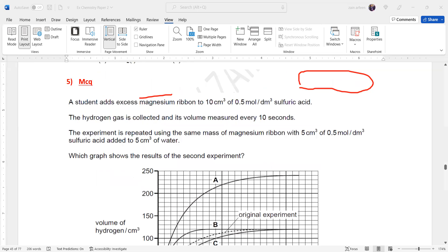At the beginning of the experiment, it was 10 cm³ of sulfuric acid, but now we have 5 cm³ of sulfuric acid. If we reduce the amount of limiting factor, the rate of the reaction will also decrease.